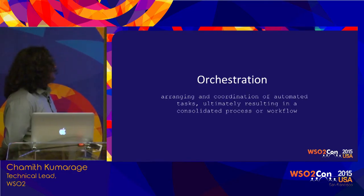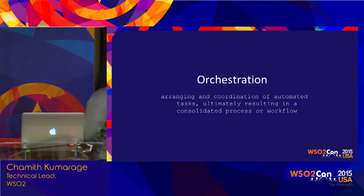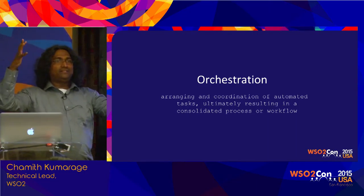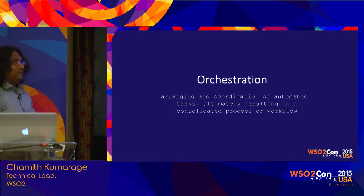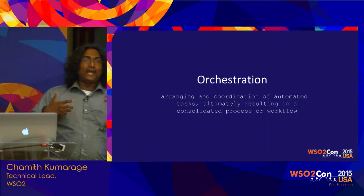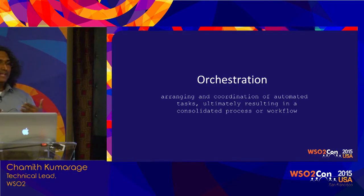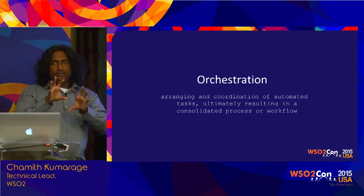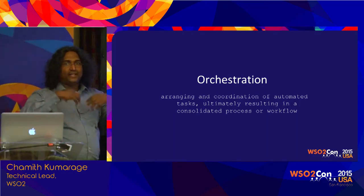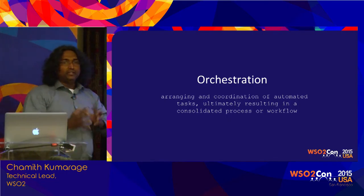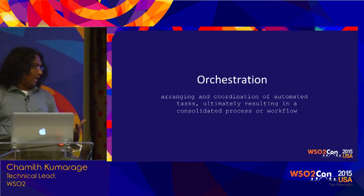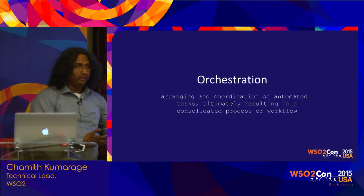And what does orchestration mean? That means arranging and coordinating automated tasks, ultimately resulting in a consolidated process or workflow. So if you take your day-to-day practices, take a deployment or a process or a workflow — there are certain pieces which we have already automated, and there can be pieces that still need some manual intervention. Orchestration means we take all the pieces that are already automated, have a coordinator that manages those things, collects data from those operations, and provides a consolidated process. Simply put, unless you have automation, you cannot have orchestration.